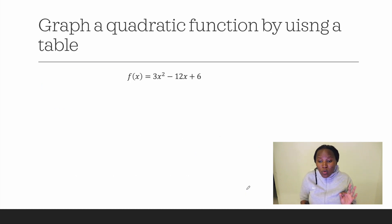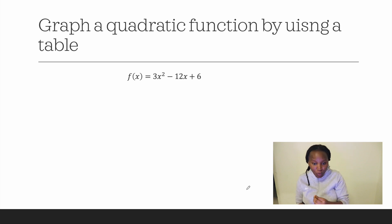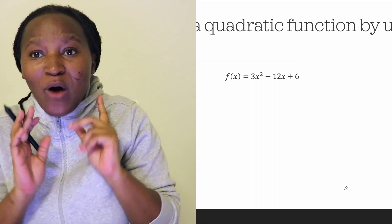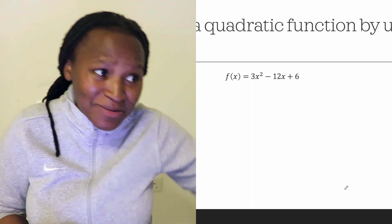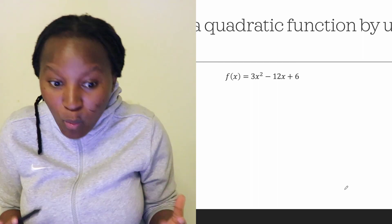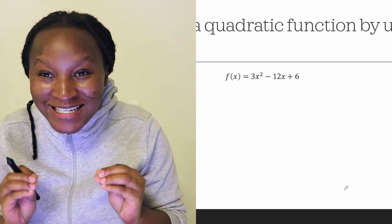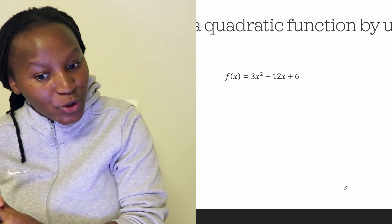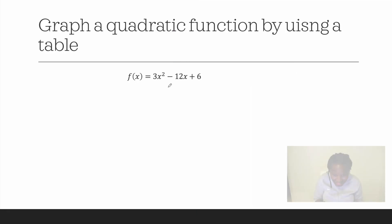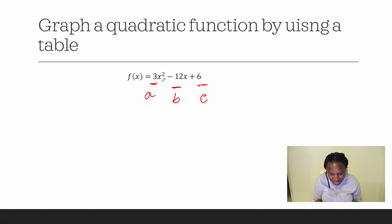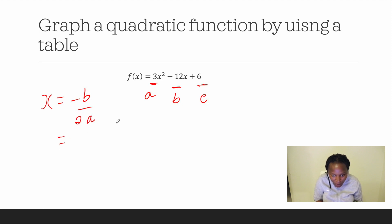Now we are given a quadratic function to graph by using a table. The first thing most people ask is: where do I start with the table? Do I start at minus 10? Negative 3? The answer is you start by finding the vertex, and the vertex is going to help you find the other things. So our a is 3, b is minus 12, and c is 6. To find your vertex, you use the formula x equals minus b over 2a. Your b is minus 12, so you put minus and then minus 12, which gives you positive, divided by 2 multiplied by 3, which is 6. So 12 divided by 6 is 2. Your vertex x value is 2.